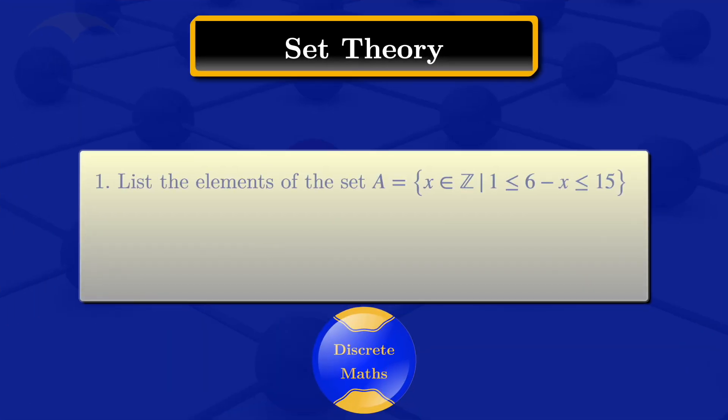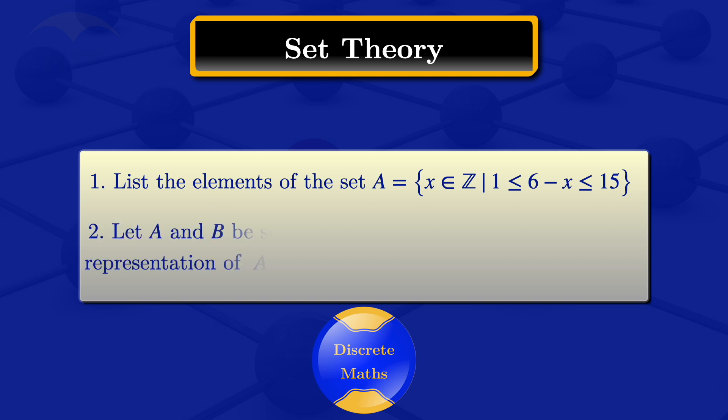In this tutorial, I'm going to list the elements of the set A, which is the set of integers such that 6 minus x is between 1 and 15. And number 2, I'll sketch the Venn diagram representation of A minus B, where A and B are finite sets.